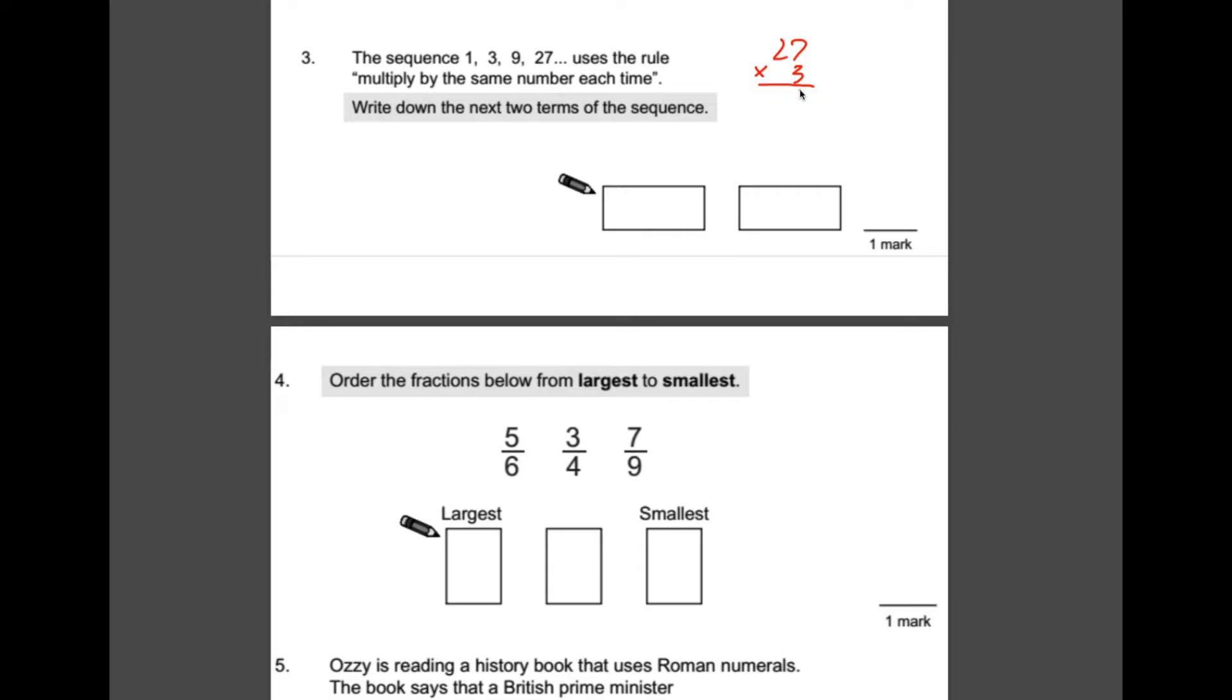3 times 7 is 21, put the 1, carry the 2. 3 times 2 is 6, add the 2 is 81, so that's the first one. And the same again, we're going to multiply 81 by 3. 3 times 1 is 3, 3 times 8 is 24, so our answer is 243.